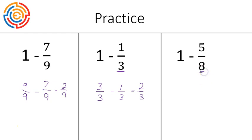In the third question, we are matching the denominator of eight. So it's going to be eight out of eight minus five out of eight, which leaves us with three out of eight. That's how we subtract from the number one.